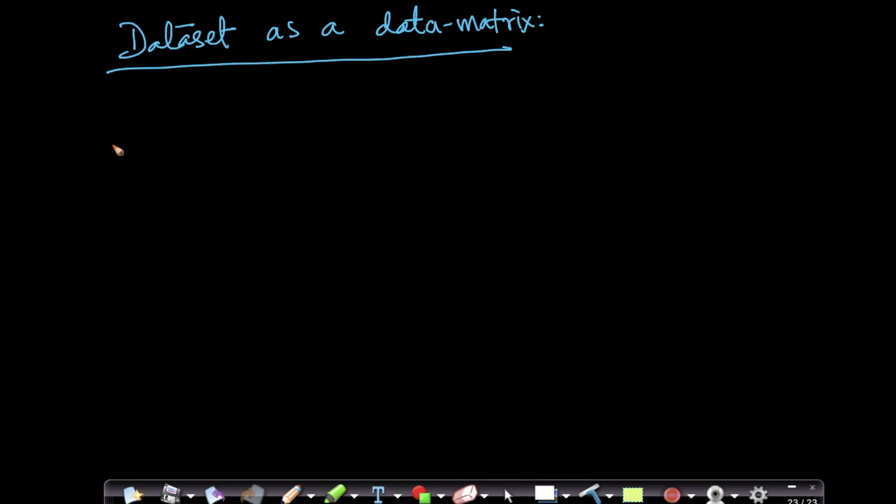One of the very common ways of representing a data set is using a matrix. Let us say how to represent it. As you might already know, a matrix is basically like a table.